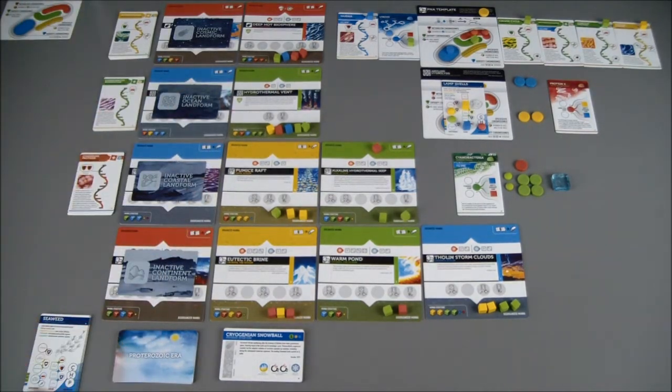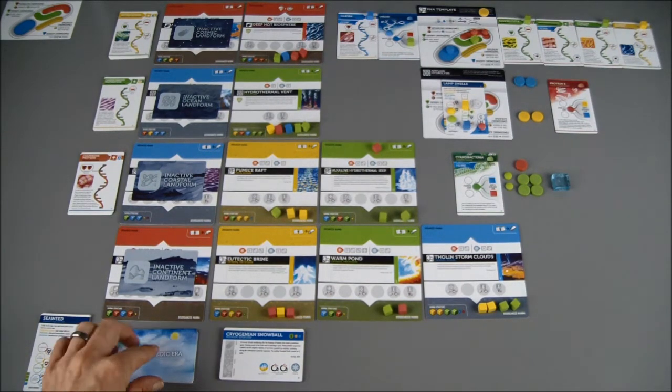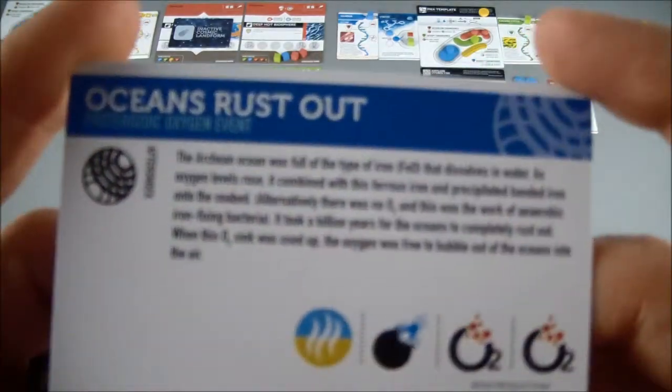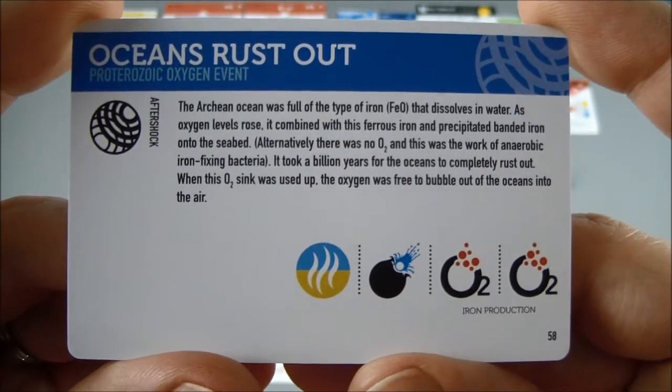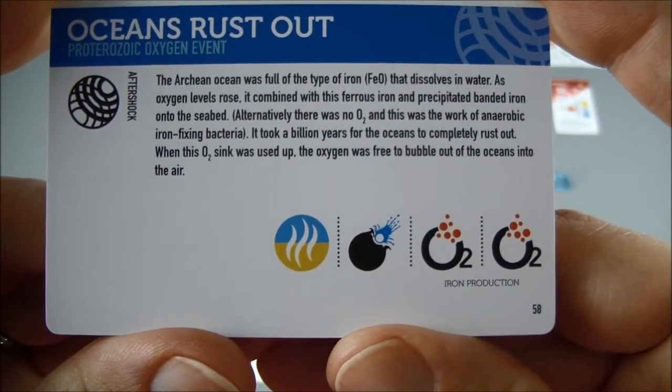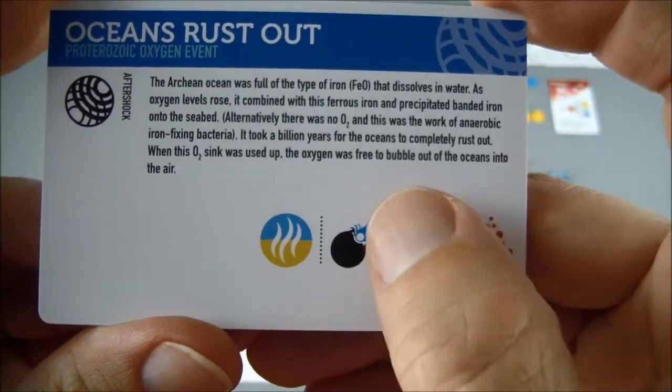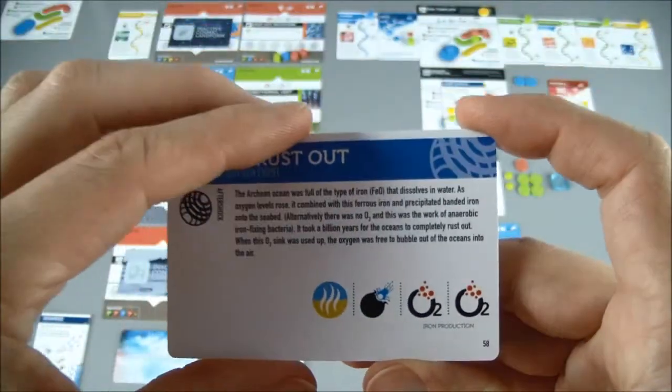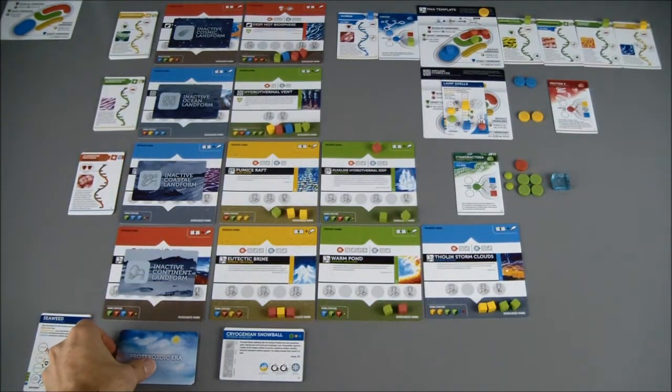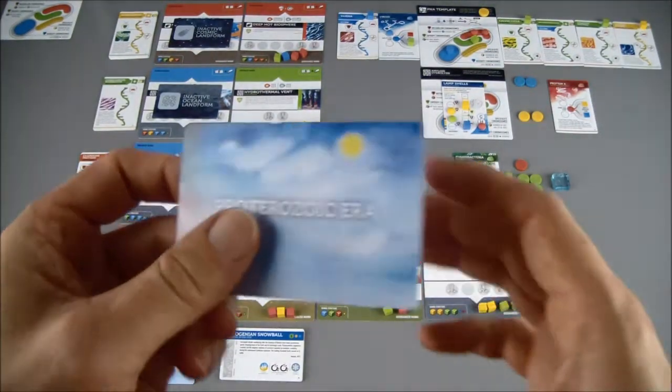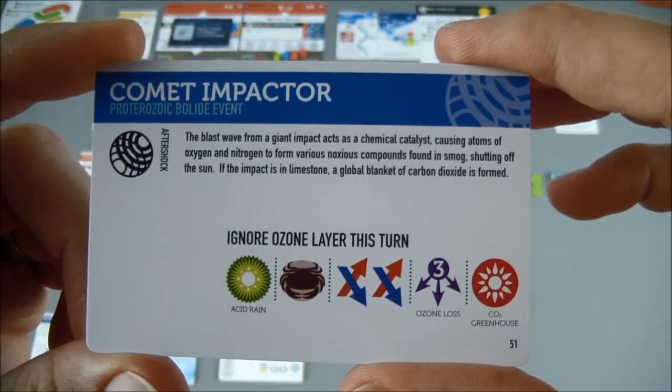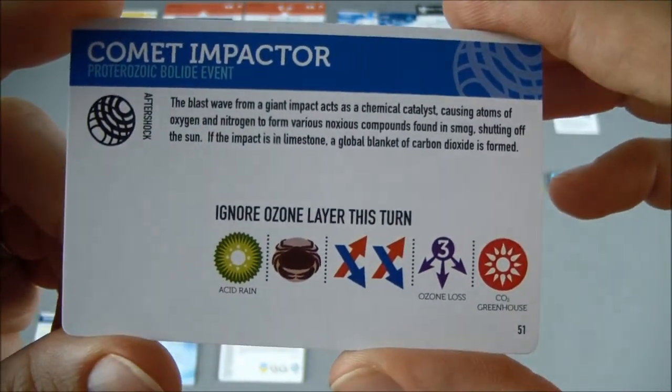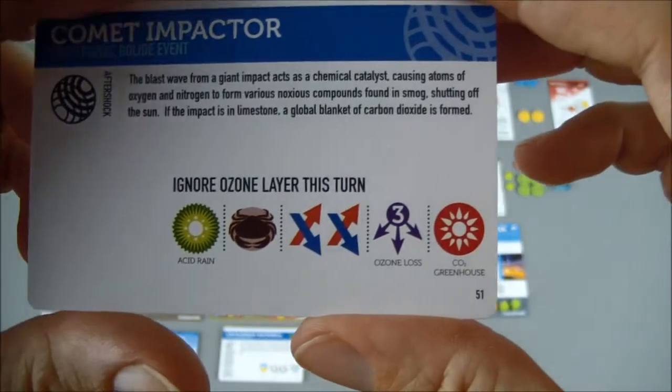So I'm going to add those ones back that I discarded at the beginning of the game. Now that I have those added back in, I'm going to go ahead and start with our next event card. And the oceans rust out. This is an aftershock, which means we're gonna have to draw another card and apply it also. Looks like we have a drought, a comet impactor, and an O2 spike, a double O2 spike.